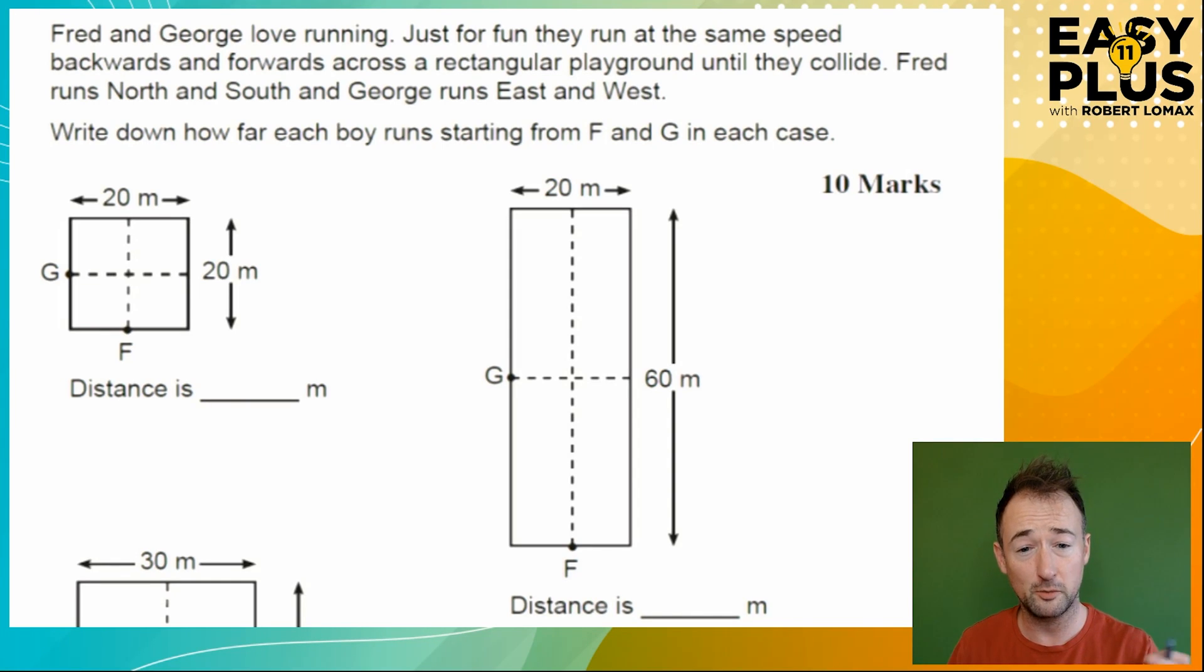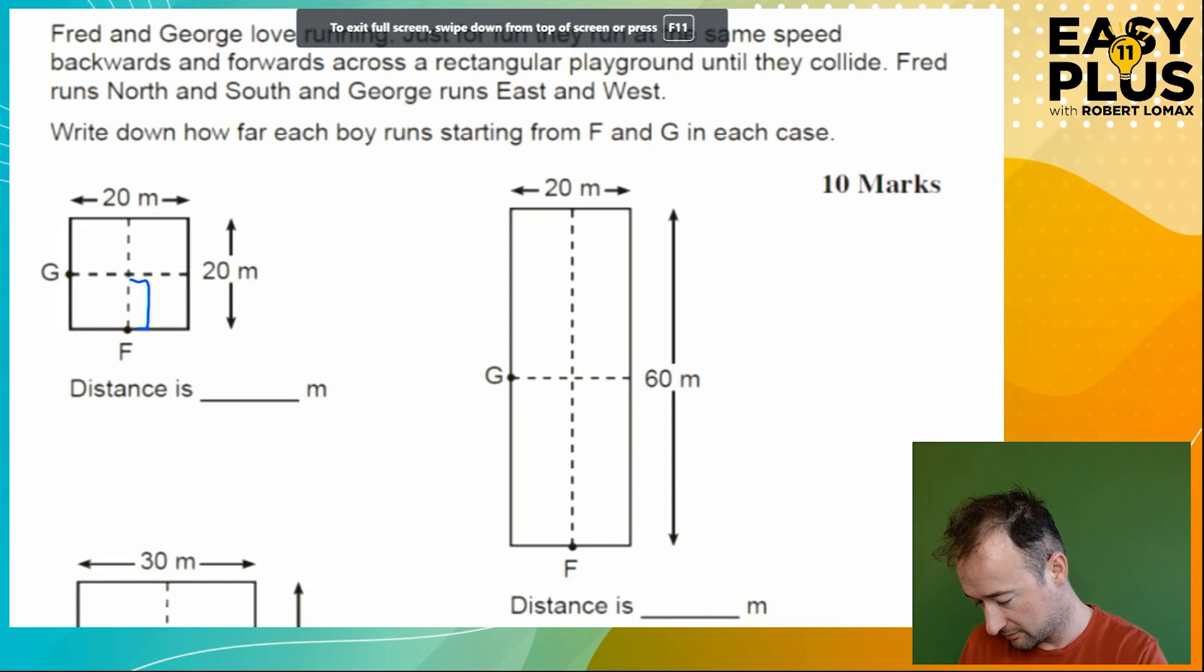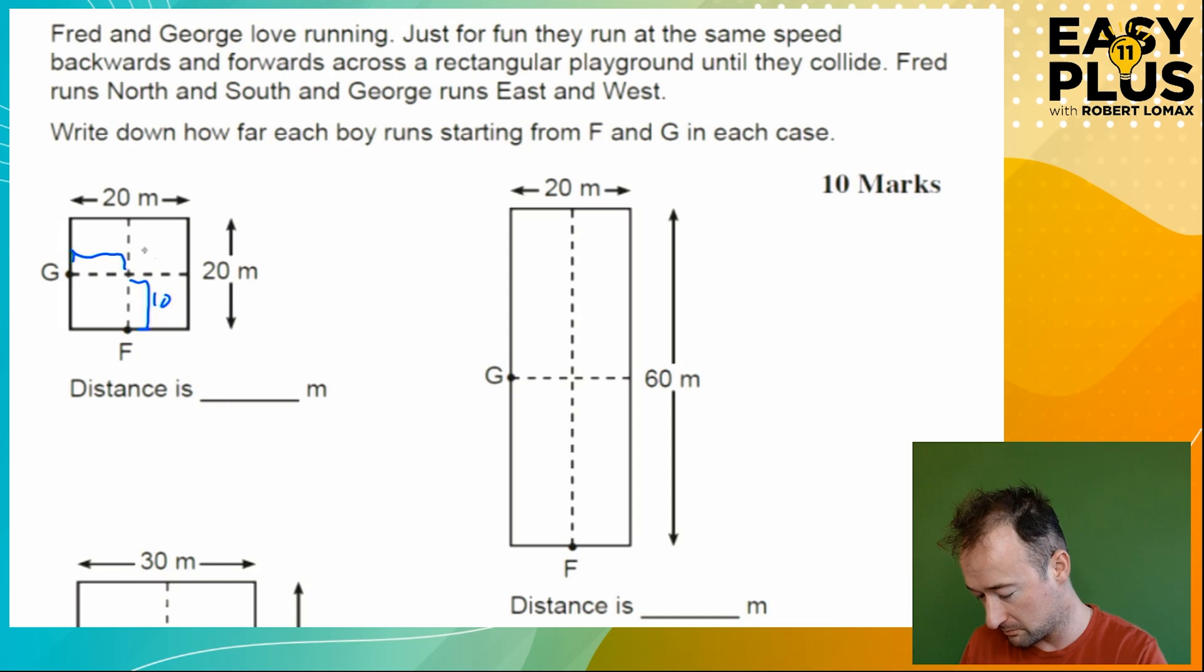So in the first question here we can see that we're dealing with a square, so if we look at this distance here from Fred's starting point, and this distance here from George's starting point, these are both 10 metres. So if they're running at the same speed, each of them will cover 10 metres, and then they'll go bam and crash into each other in the middle. So this one's a really easy warm-up, they just run 10 metres each. Remember we're talking about the distance that each boy runs, not the combined distance, so that's simply 10 metres.